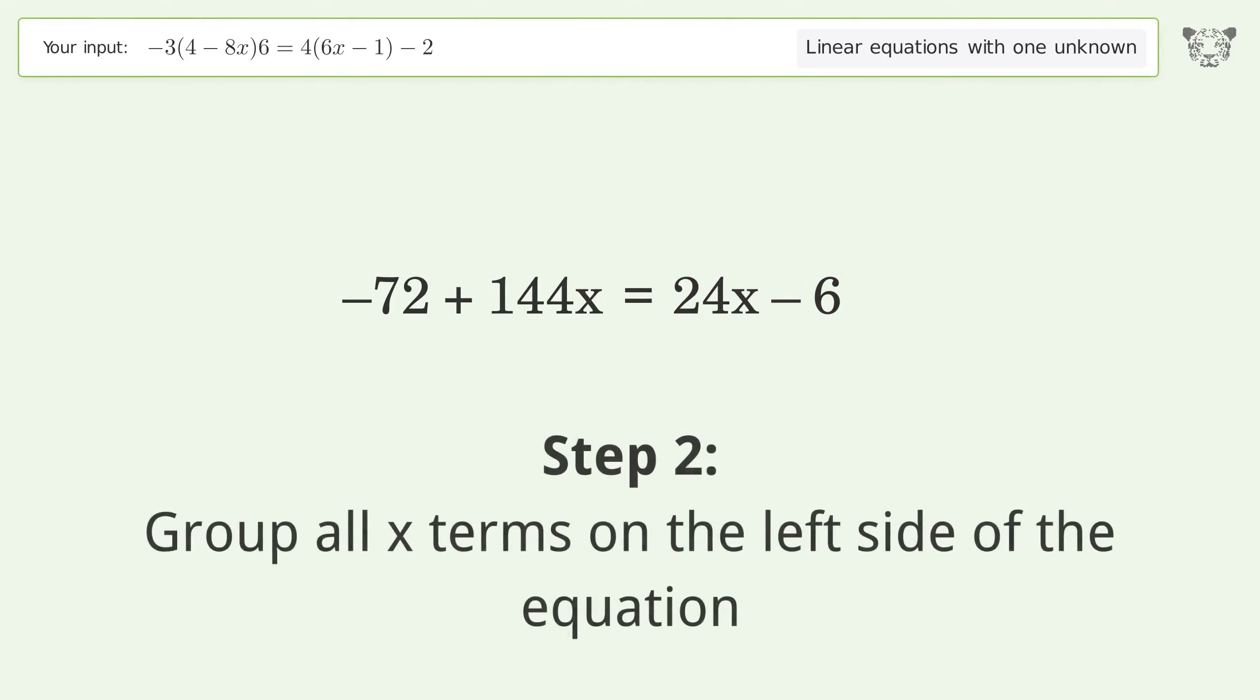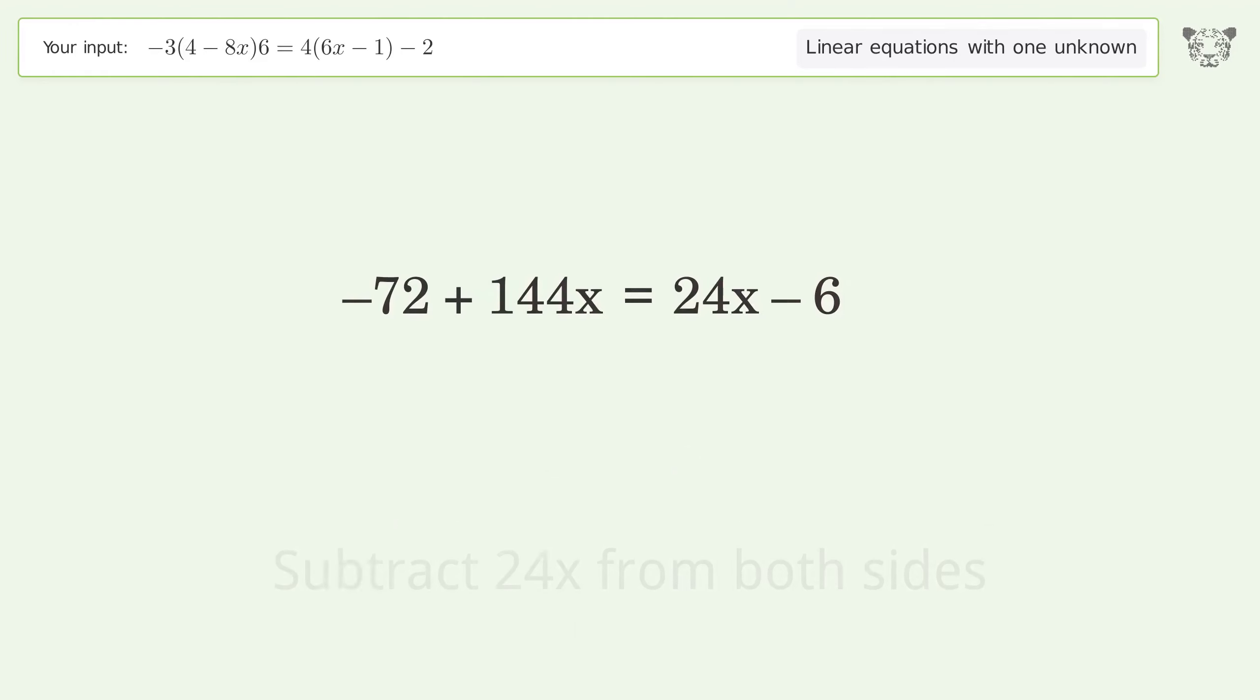Group all x terms on the left side of the equation. Subtract 24x from both sides.